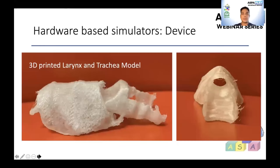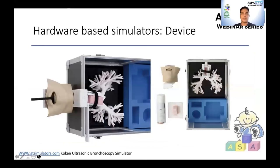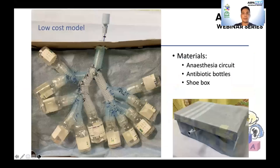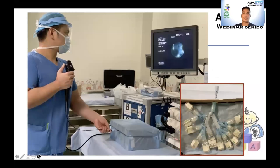Another option is to use a 3D-printed larynx and trachea model for more realistic anatomic landmarks during training, or a medium-fidelity model equipped with face, skin, and lungs. Learning bronchoscopy maneuvers could be challenging, as simulators can be expensive and not readily available. In our center, we have a low-cost trachea-bronchi model made from anesthesia circuits and cleaned antibiotic bottles, with flags of different countries at the end of every bottle. The goal is for participants to search for as many flags as they can, training proper bronchoscopy handling and maneuvers.